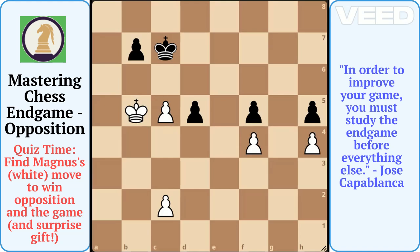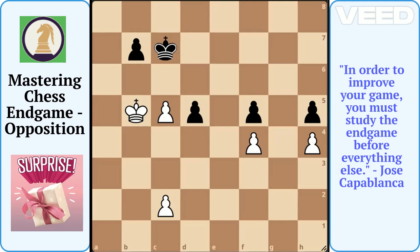Let us check your understanding of opposition via this endgame position from the Magnus Carlsen vs. Hou Yifan game in the Tata Steel Chess tournament 2016. Magnus, playing with white, has only one correct move to win opposition and the game. Please share your answer in the comments below. There is a surprise gift for the first correct answer.